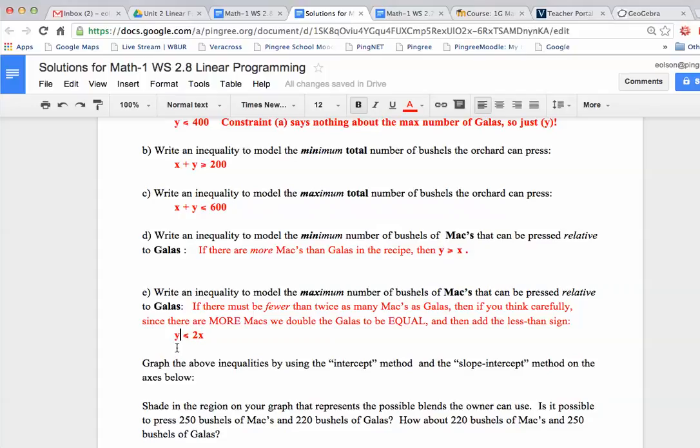And then part E here says, well, you want to have Y be greater, but they've got to be fewer than twice as many. You can't go whole hog and only have there be Macs. So there must be fewer than twice as many Macs as Galas. So if there are more Macs, you've got to double the smaller one in order to be equal to the Macs. Think about a little example: if you've got 10 bushels of Galas, you can go up to but not beyond 20 bushels of Macs. So 10 times 2 is 20, and you've got to be less than or equal to that. Maybe in this case it should be strictly less than because of the wording, but we're not going to quibble over whether it's a dotted or solid line. It's the shading to one side or the other that's important.